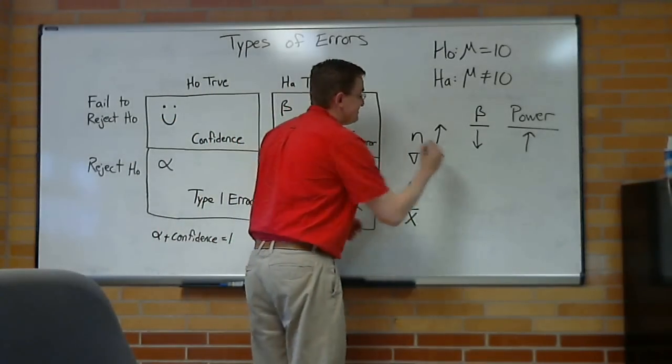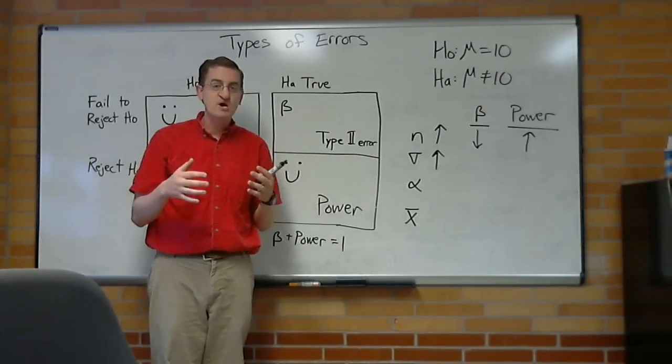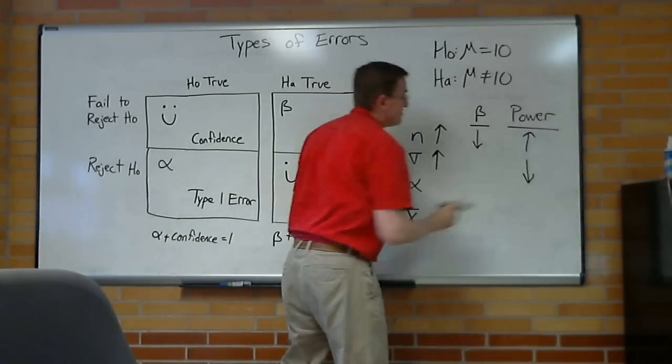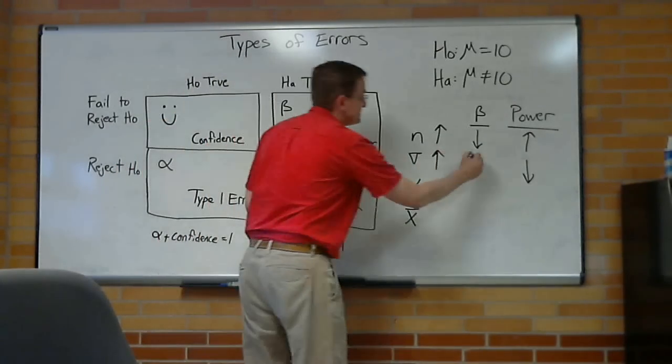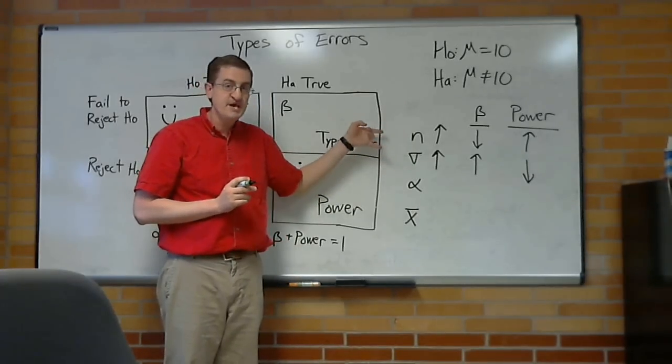What about error? If our standard deviation goes up, what will happen? Well, having more error in the model makes it harder to tell what's going on. Harder to know that it's the alternative that's true, and easier to make a mistake. It makes sense that n and sigma are going to behave oppositely.